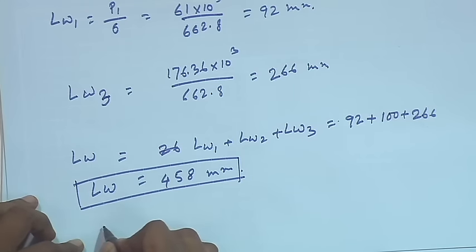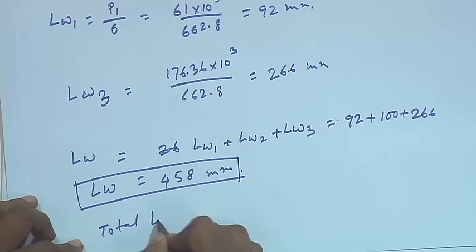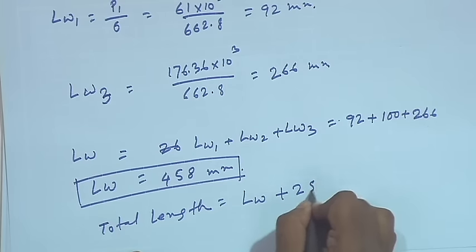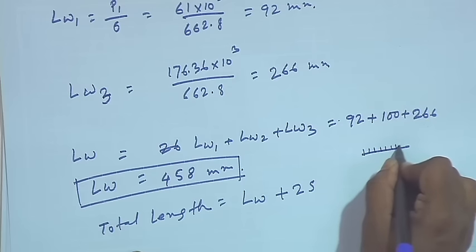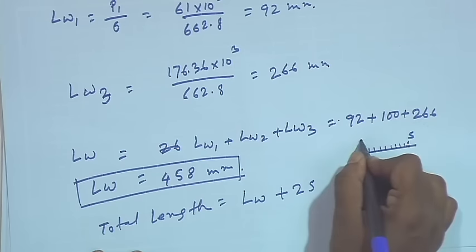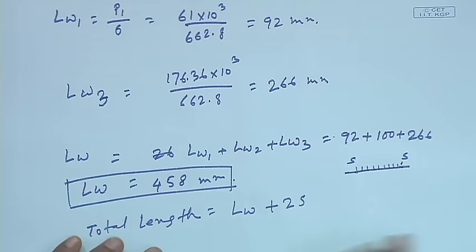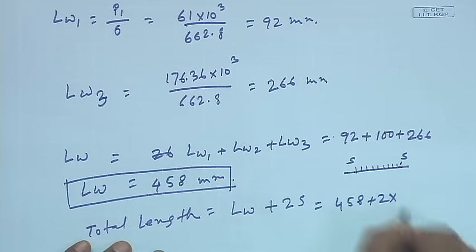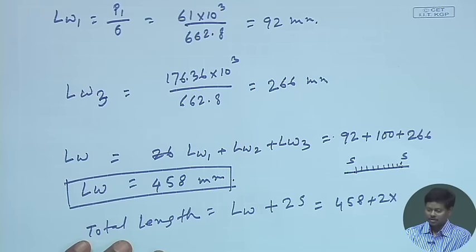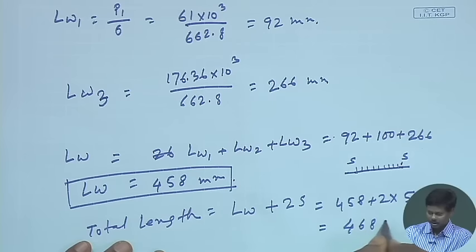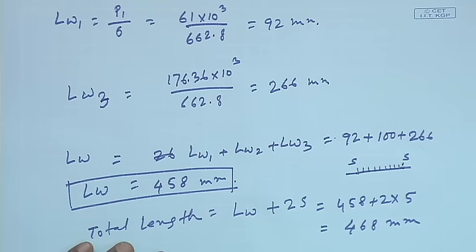Total weld length = effective length + 2S, because we need to add S at each end to ensure efficiency of the joint. So total length = 458 + 2 × 5 = 468 mm.